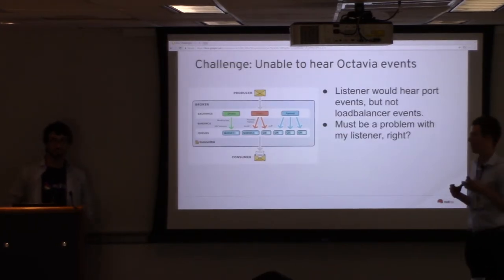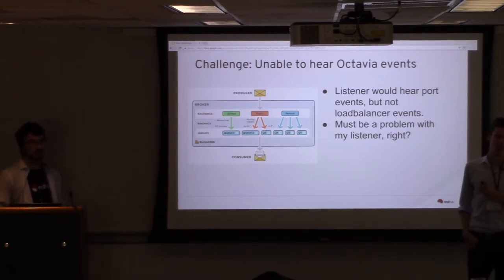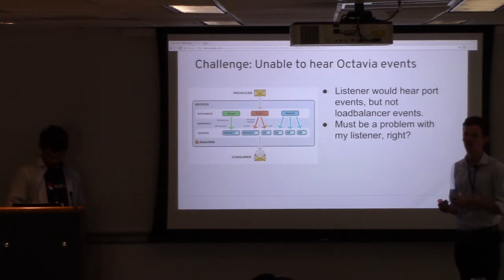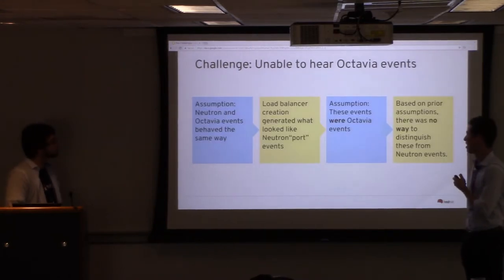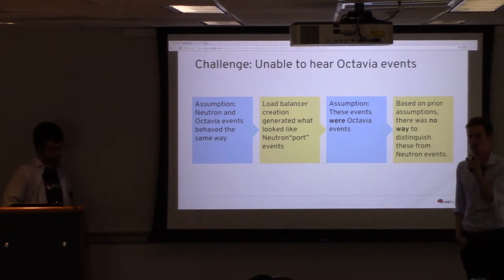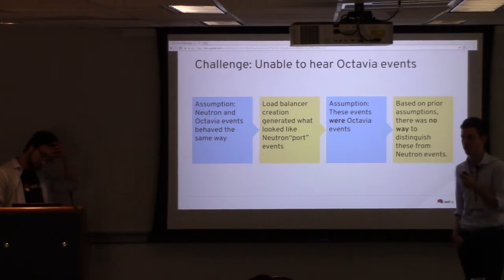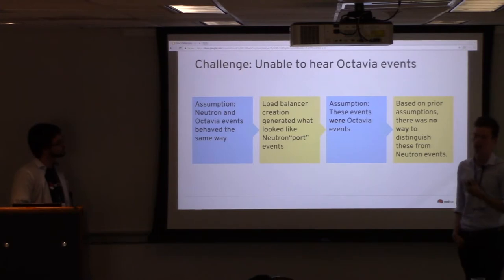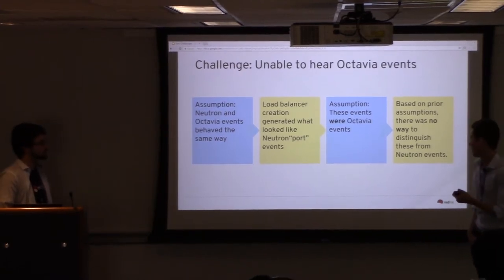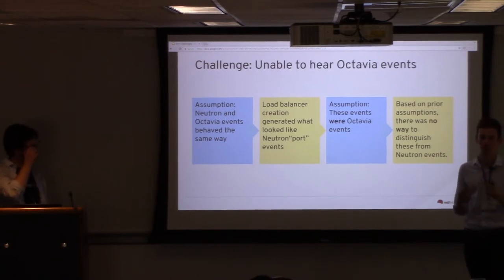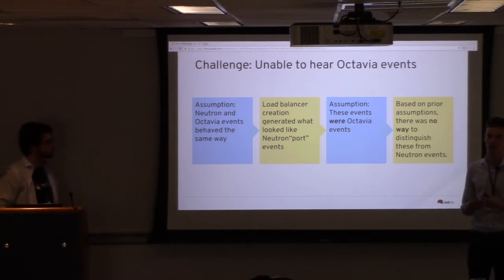This brings me to the challenge of making two technologies meet in the middle. My listener would not hear any Octavia load balancer events — it would hear port events from Neutron, but nothing from Octavia. Naturally, since it was working with Neutron and not Octavia, I figured the problem must be within my listener. I assumed that Neutron and Octavia events behave the same way, because they're both OpenStack services. When I used an OpenStack load balancer command, it generated events that appeared to look like port events — the event type in the JSON return would be 'port dot something.' I assumed these were Octavia events because they were generated by a load balancer call.